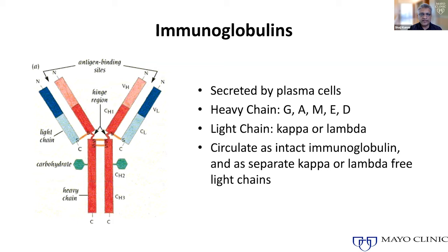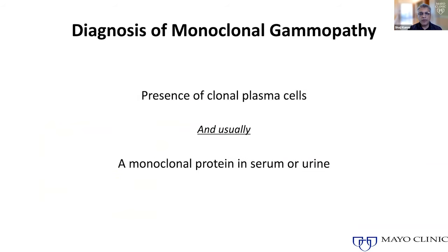These abnormal plasma cells normally secrete immunoglobulins — proteins your body uses to fight infections. They are made of two heavy chains, which are bigger molecules, and two light chains, which are smaller pieces. The heavy chains can be five different types: typically IgG or IgA, and in a smaller number of patients IgM, and rarely IgE or IgD. The light chains are either kappa or lambda type. They are bound together — two heavy chains and two light chains — forming what we call an intact immunoglobulin.